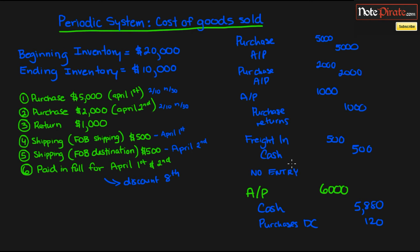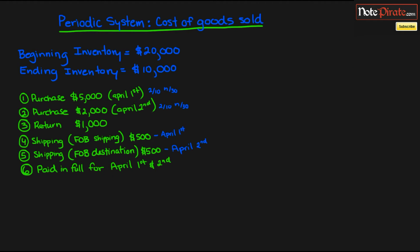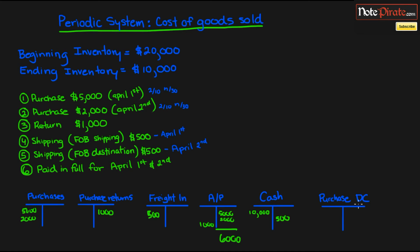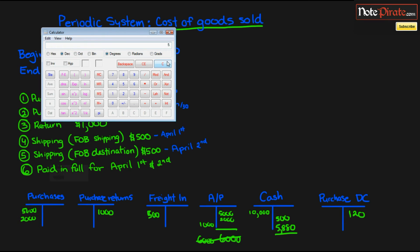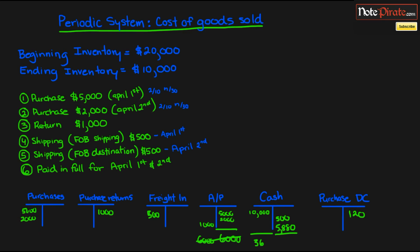Now we can go back to our T-accounts. The $120 was the discount. We got rid of the accounts payable — we paid that all off. We had a credit of $5,880 and a debit of $6,000, so accounts payable has no balance anymore. And our cash has a final balance of $10,000 minus $500 minus $5,880, which equals $3,620.